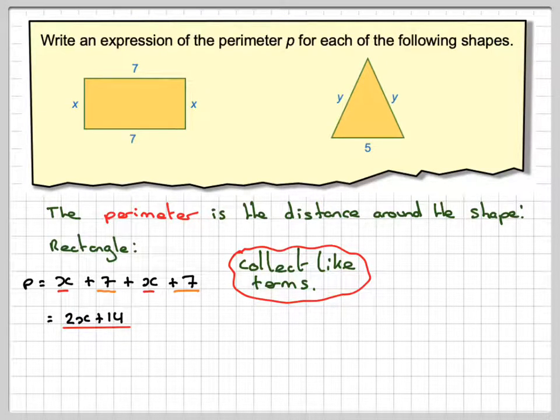And then if I know the value of X, I can actually find the perimeter of the shape. Now for this triangle, same idea, I'm going to start here. So we're going to have P is equal to Y, plus 5, plus Y.